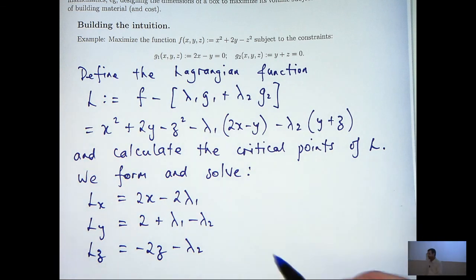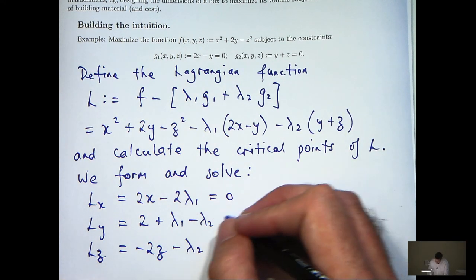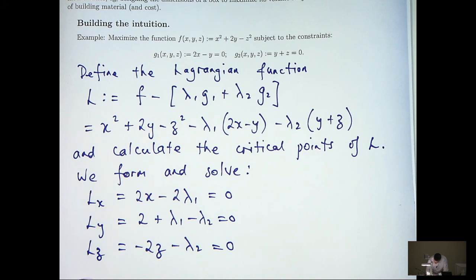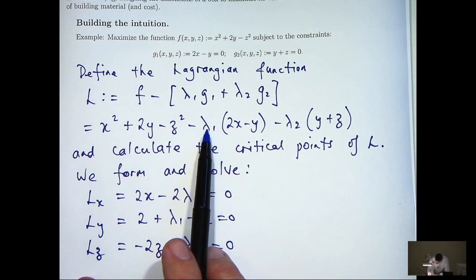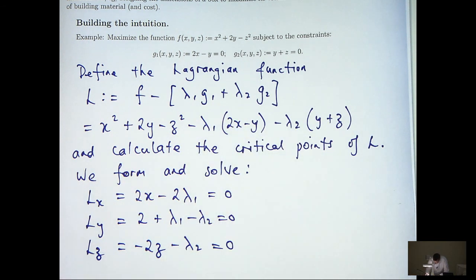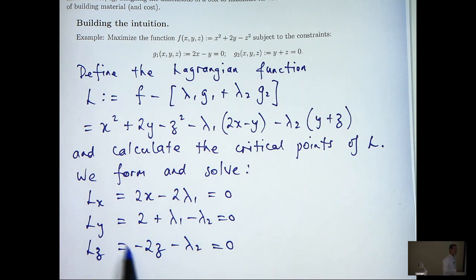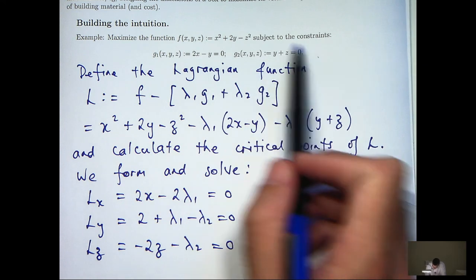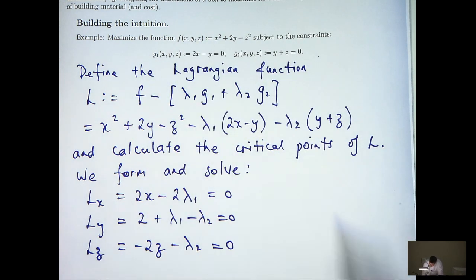To find the critical points, we set these equal to 0. Now you may be thinking: L also depends on λ1 and λ2 — what about the partial derivatives with respect to λ1 and λ2? Well, actually, if we calculate those partial derivatives and set them equal to 0, they're actually the constraint equations, so I don't really need to do those calculations separately.